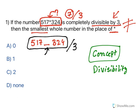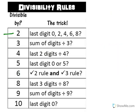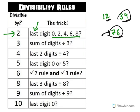Take the example of 2. In order to be divisible by 2, the last digit should be an even number. We all know this but may not consciously realize it. See: 12 is even, 34 is even, 76 is even. What decides the evenness? It is the last digit. Even if the first digit is odd, if the last digit is even, the whole number is even. So to be divisible by 2, the last digit must be even.